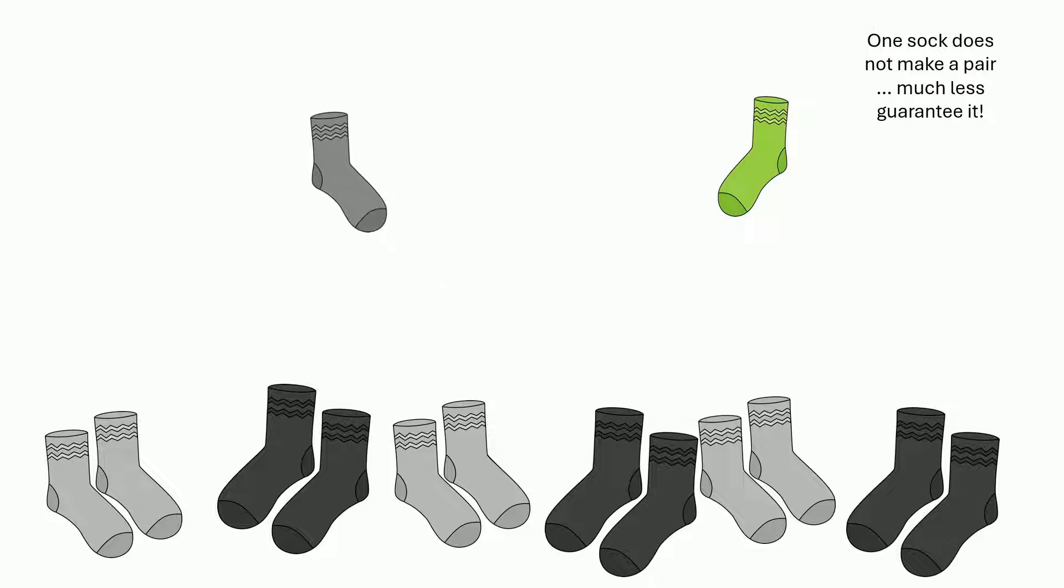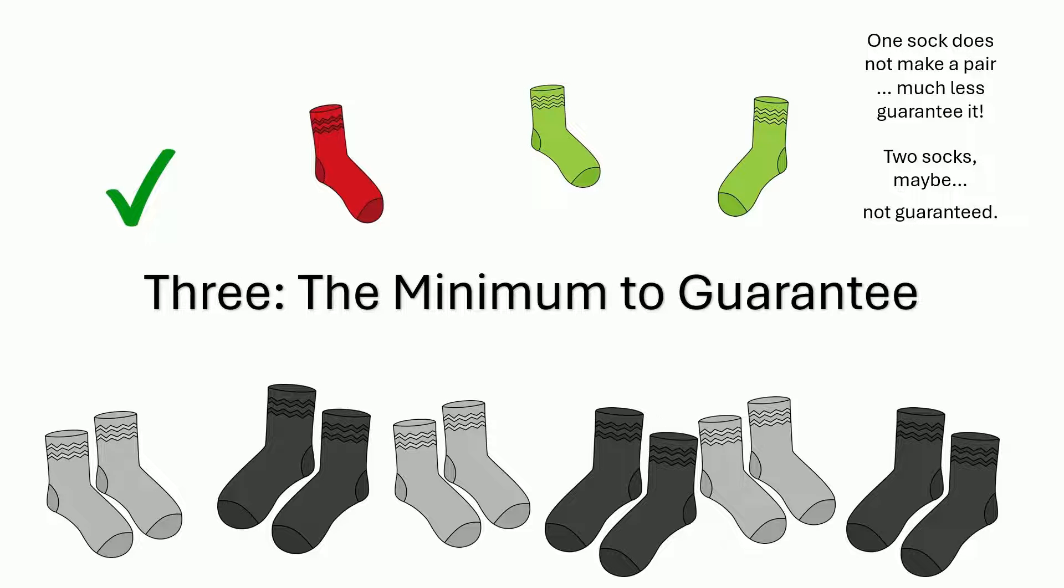So you got to pick another. You pick another, I don't know, might be a match, might not, right? I mean, if it's green, it's good to go, but it might be red. So it's not guaranteed. So that's not it. When you pick your next sock though, your third one, it's either red, which is a match, or it's green, which is a match. So the minimum to guarantee in this situation is three.